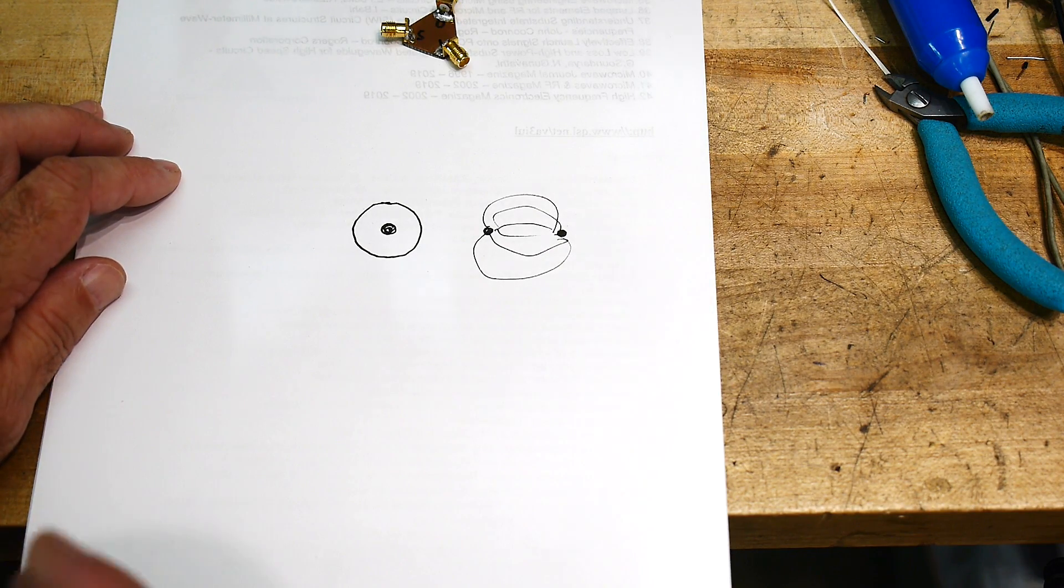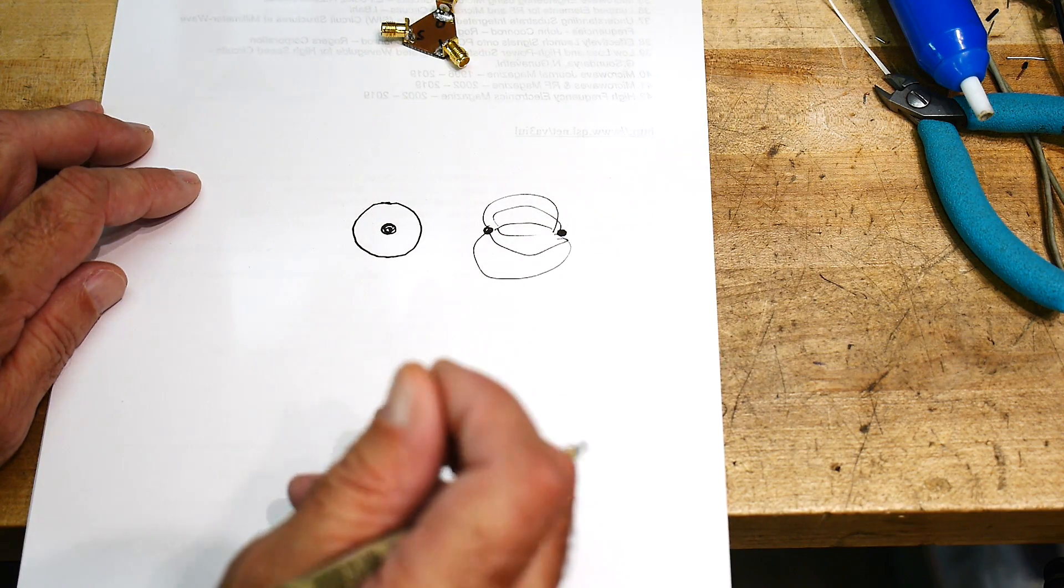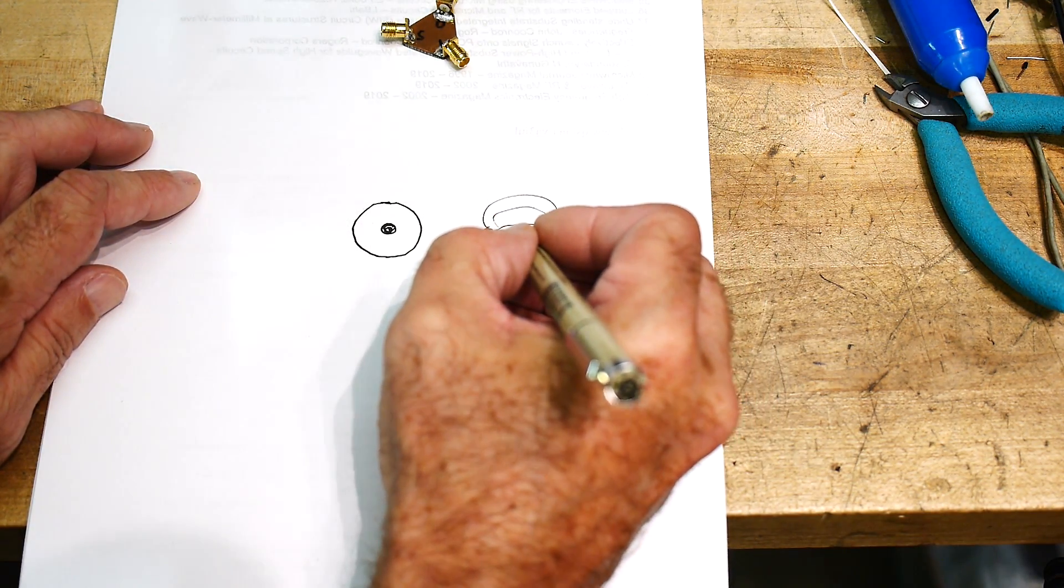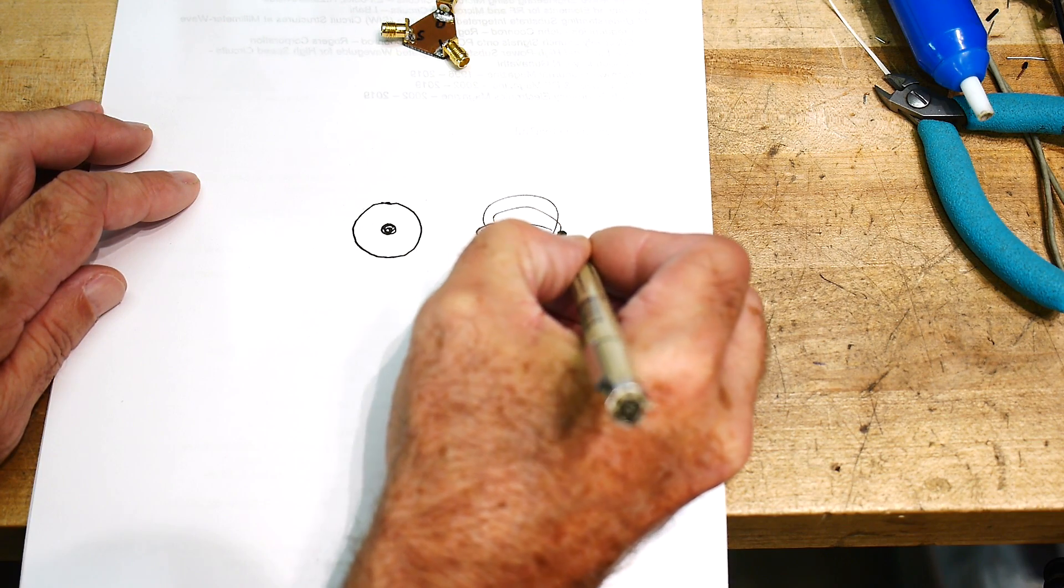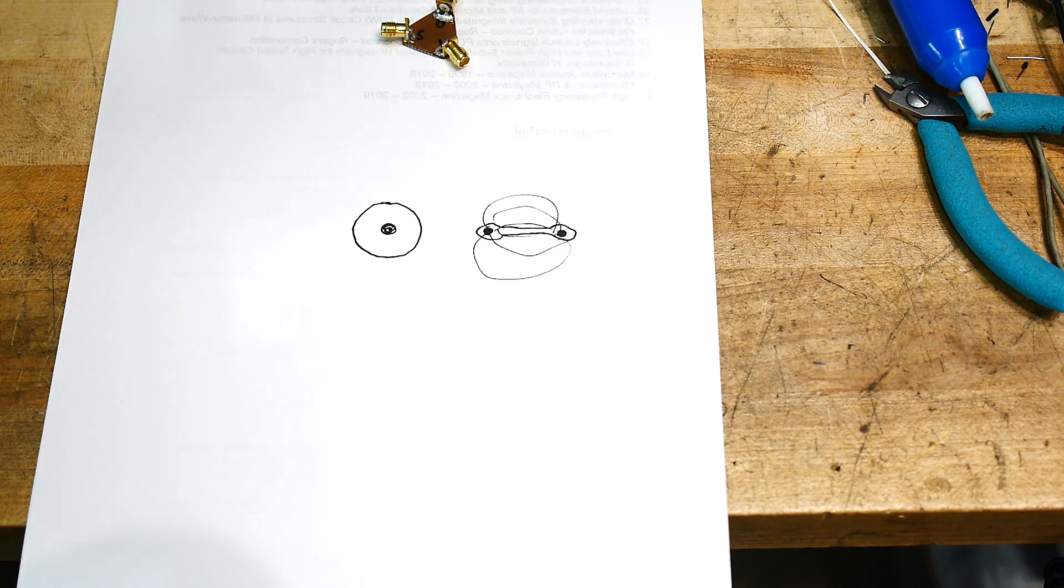Back in the old television antenna days, there was a twin lead. I think it was 300 ohm and it was two wires and there was a piece of plastic that encapsulated the thing, but it was open.